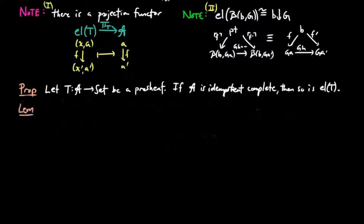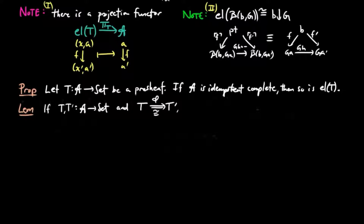Next, we have a lemma. If T and T' are pre-sheaves on A and phi is a natural isomorphism between them, then phi induces an isomorphism between their categories of elements.